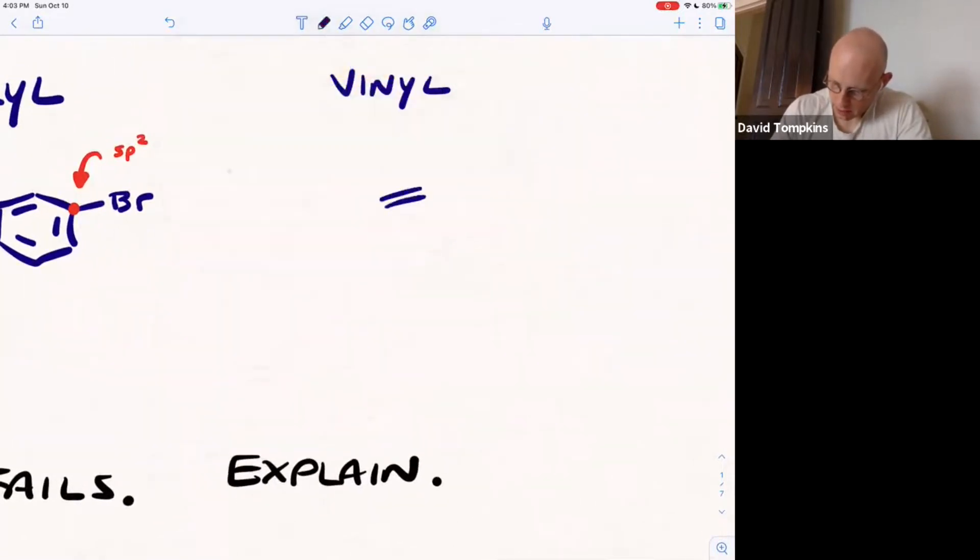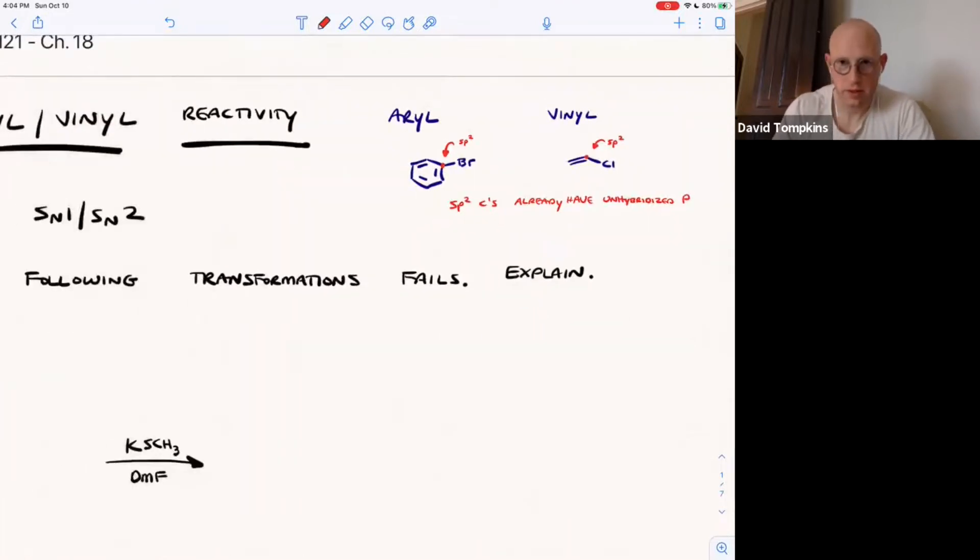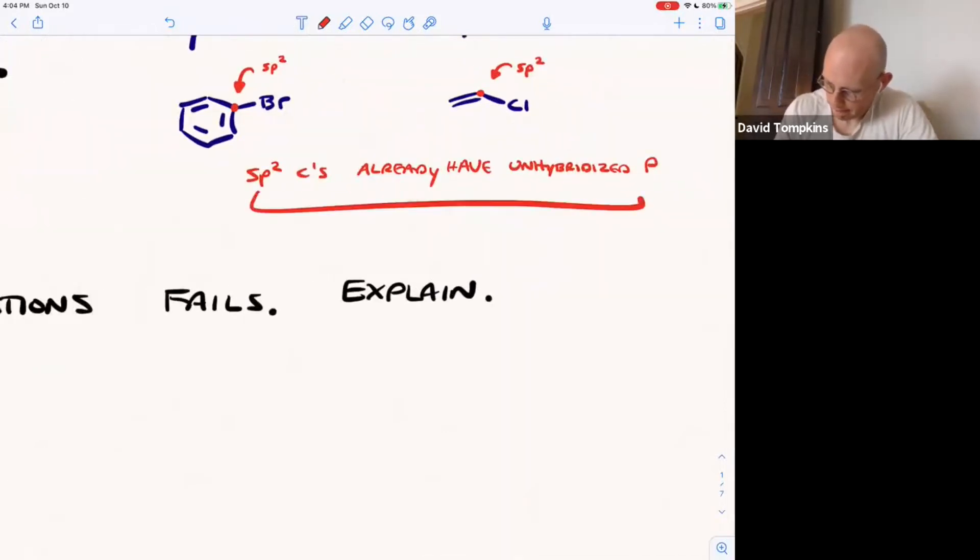So a vinyl halide is not an aromatic ring, but instead is some sort of alkene, and that will have a corresponding halogen attached, also sp2 hybridized at the carbon atom. So these sp2 carbons already have a pi system that they're participating in, and they have an unhybridized p-orbital. And it's the presence of that unhybridized p-orbital that's going to limit their reactivity.